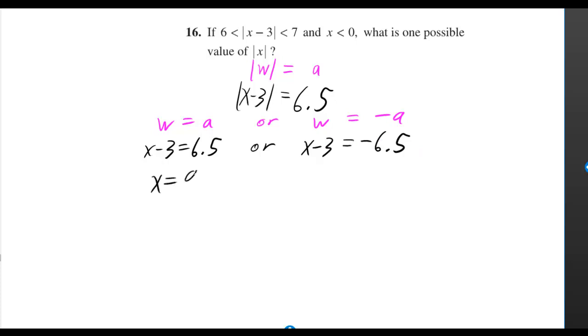The first one doesn't work because they told us x had to be negative. But don't turn off the video yet. They told us what is the absolute value of x. So since they're asking for the absolute value of x, you've got to get the absolute value of negative 3.5, which is 3.5.